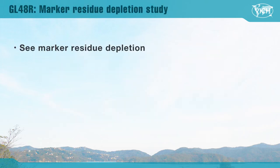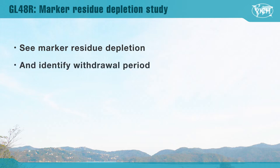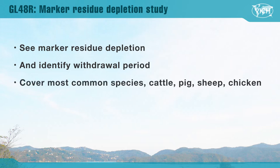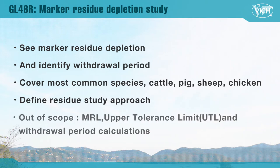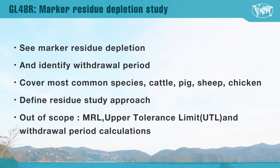GL48R has been designed to identify marker residue depletion after the cessation of treatment to the MRL (maximum residue limit) in target tissues, and provide information to determine the withdrawal period. This guideline encompasses the residue study approaches for most common species, including cattle, pig, sheep, and chicken. It defines a residue study approach including dose formulation, animals, drug administration, sampling time points, and sampling targets. Out of scope of this guideline are the methods to establish MRL, determination of the upper tolerance limit (UTL), and determination of the withdrawal period. Those procedures are to be provided by each regulatory authority.